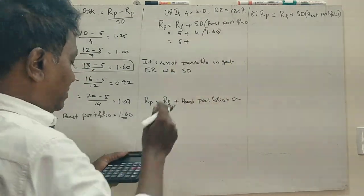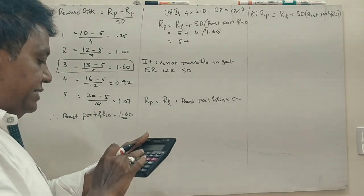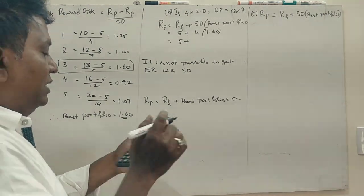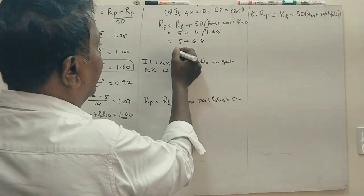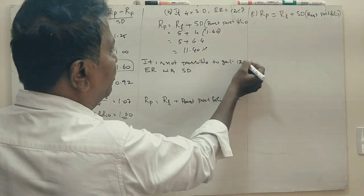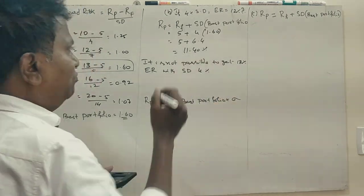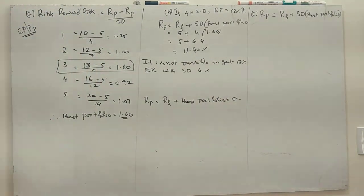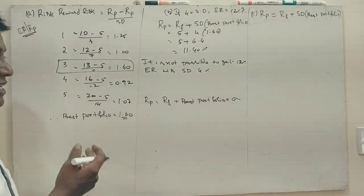5 plus 1.6 into 4, 6.4, which is 11.40. So it is not possible to get 12% with the standard deviation of 4%.